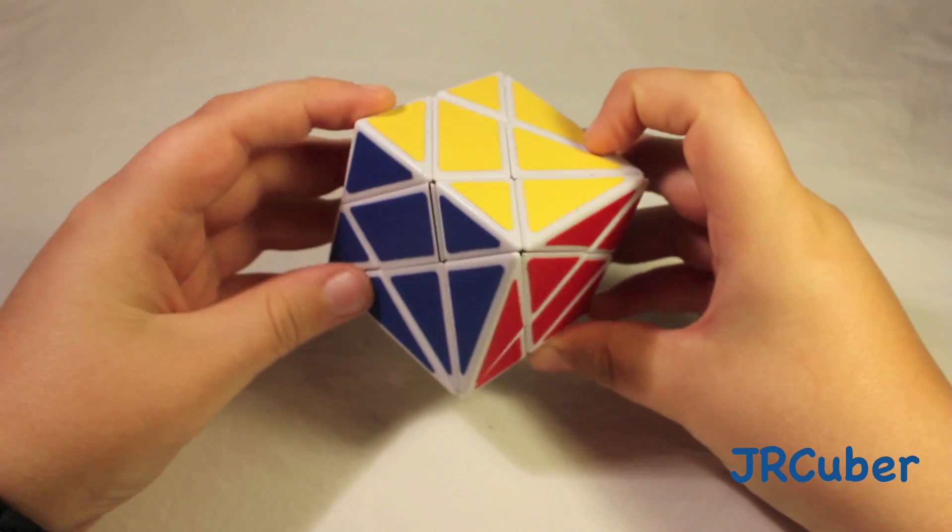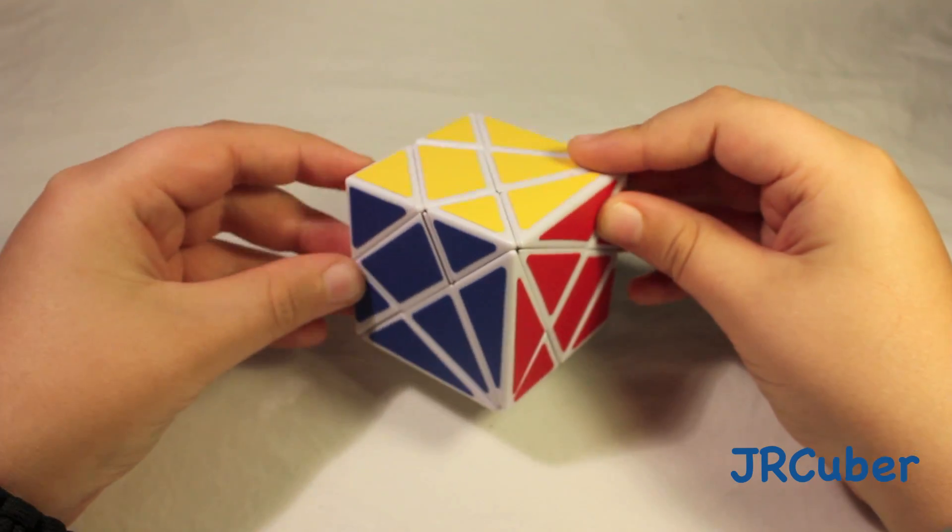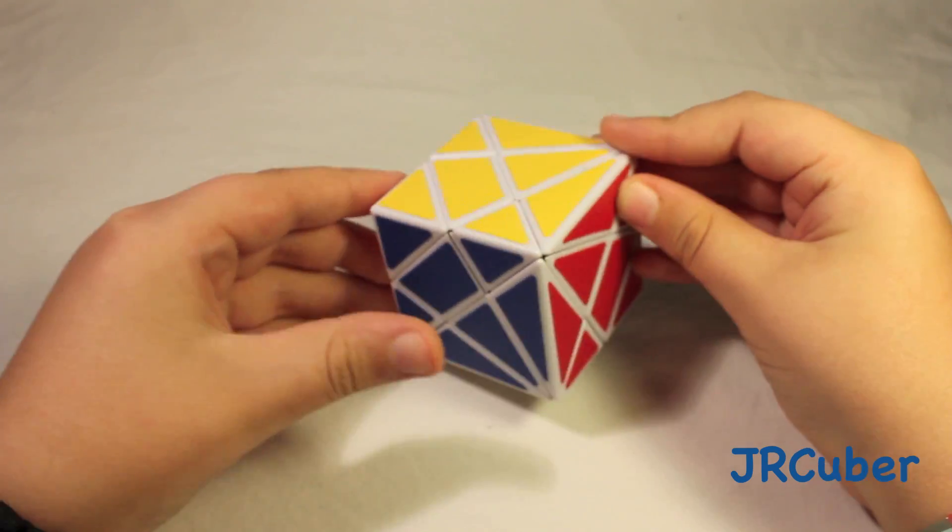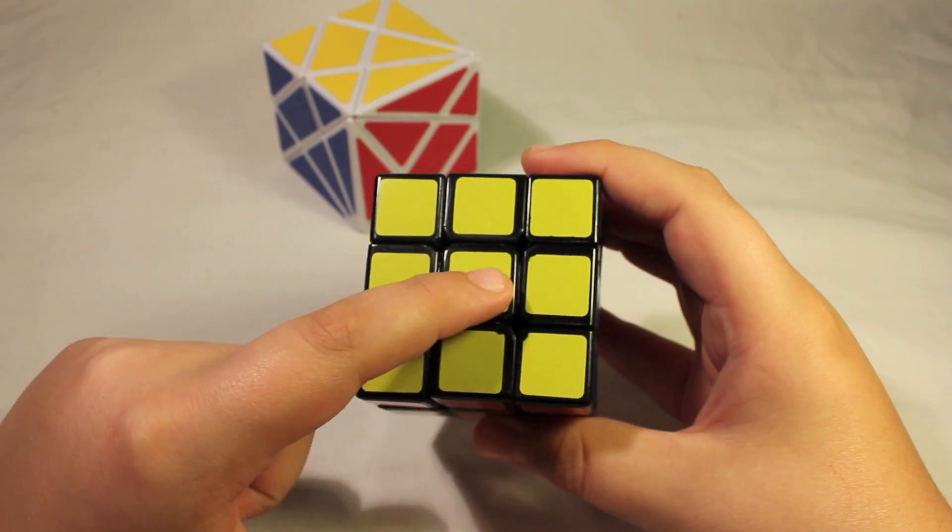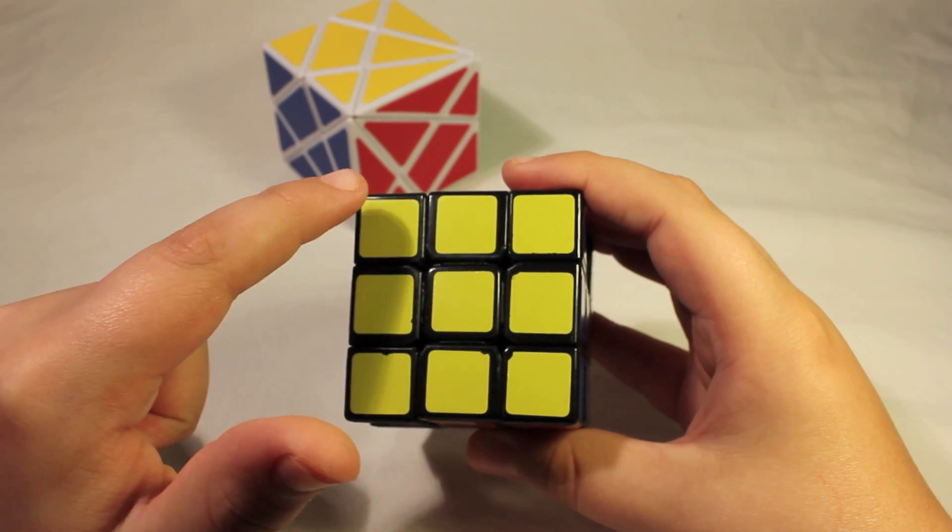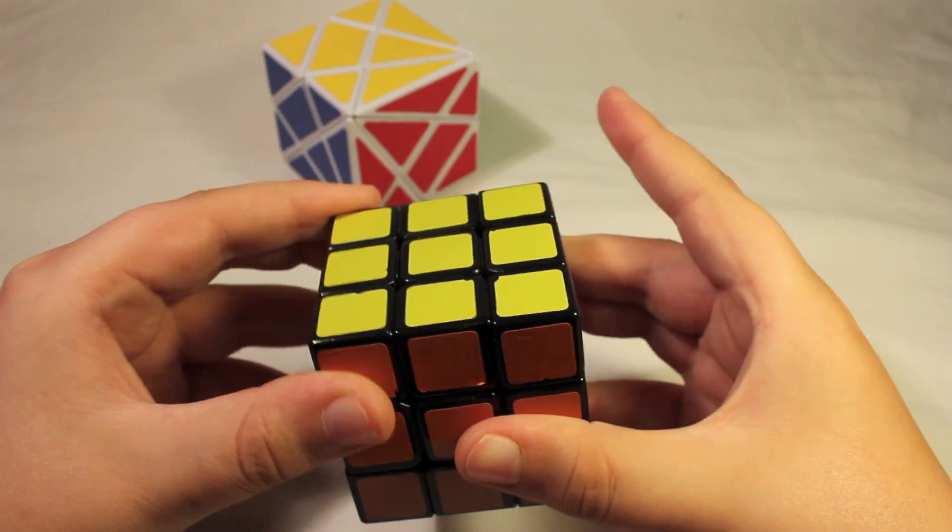Now before I scramble this up and teach you how to solve it, I want to go over the pieces real quick. So on a normal Rubik's Cube, we have a center, four edges, and four corners, which makes up a side.